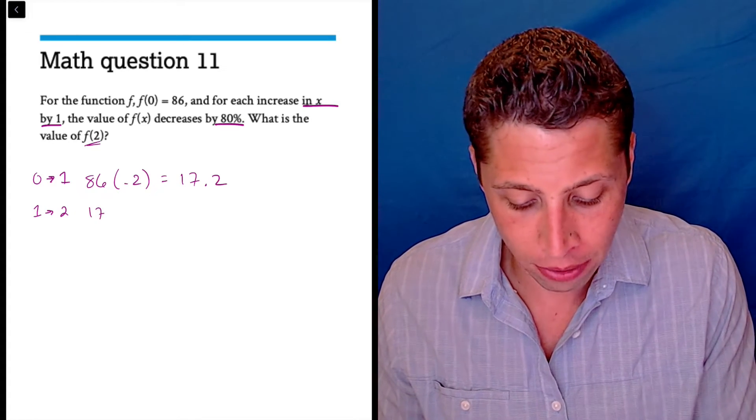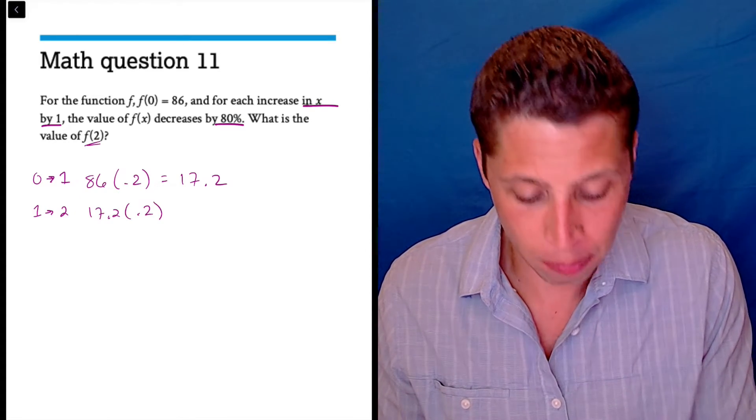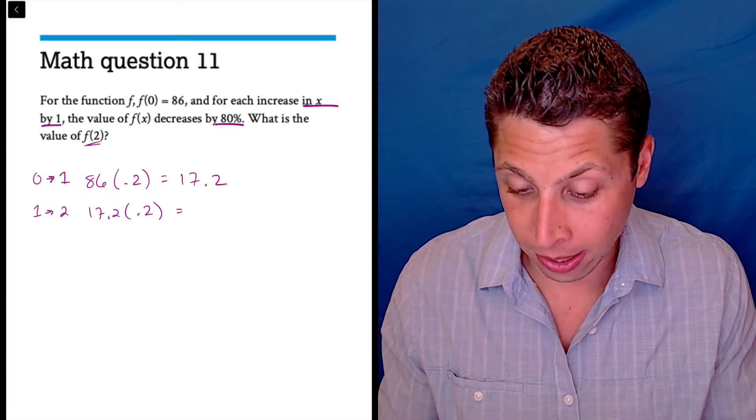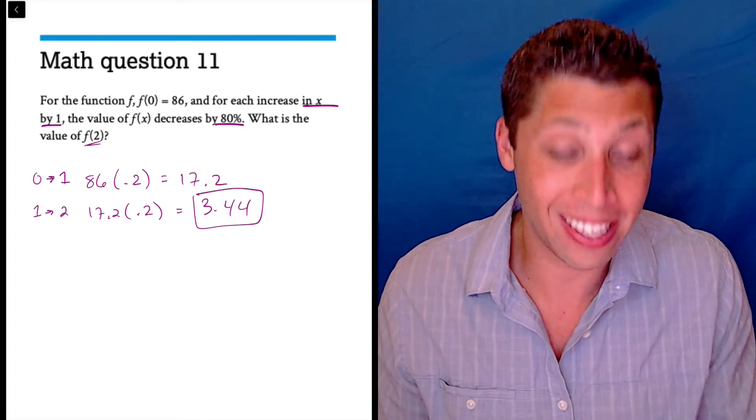Now we need to get from 1 to 2, so we've got to do it again. Now it's 17.2 times 0.2, and that is 3.44, which is the answer.